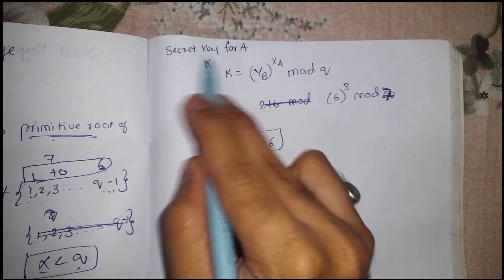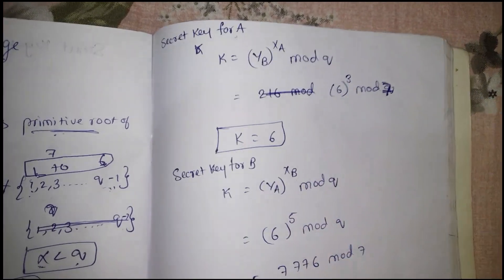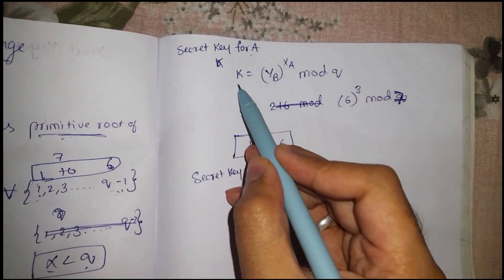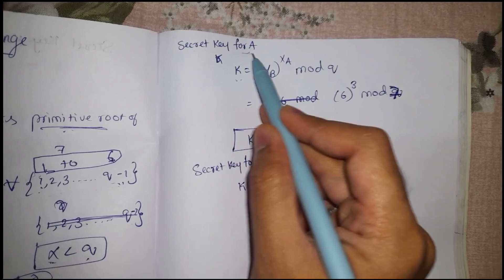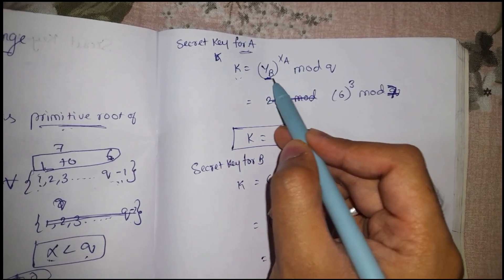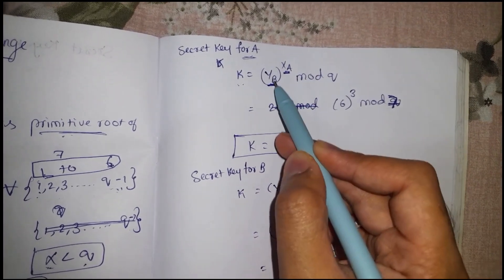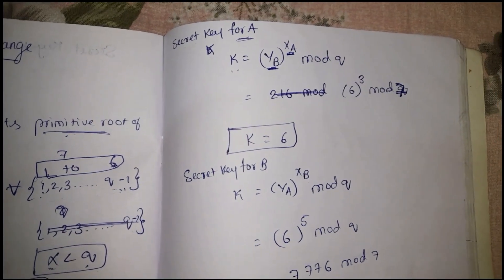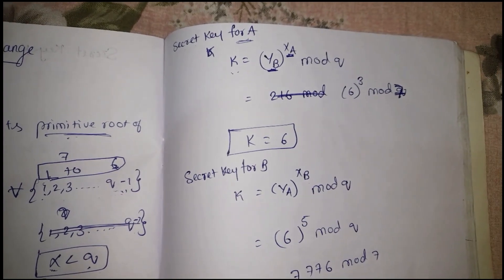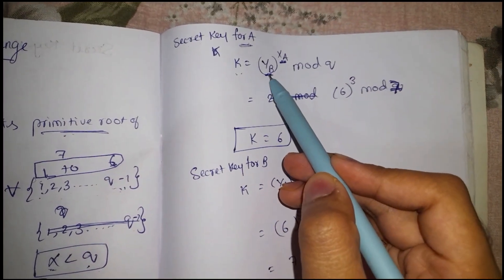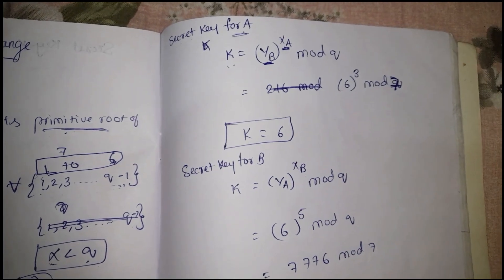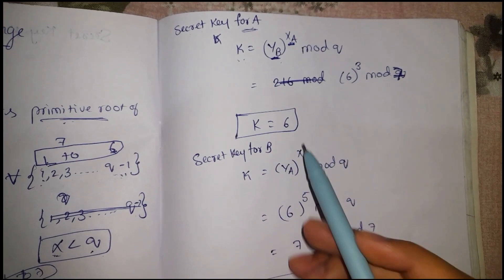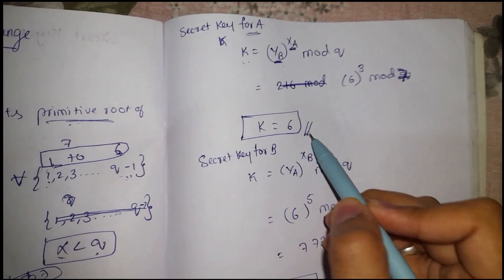The secret key for A, if the message is being transferred from B to A, in that scenario the secret key for A will be the public key of B and the private key of A. So if A wants to calculate its own secret key, it will have to make use of public key of B and its own private key. Upon simplifying this, we will get the secret key as 6.